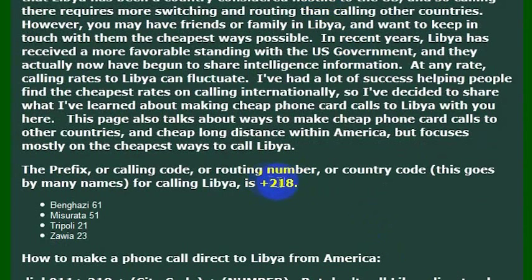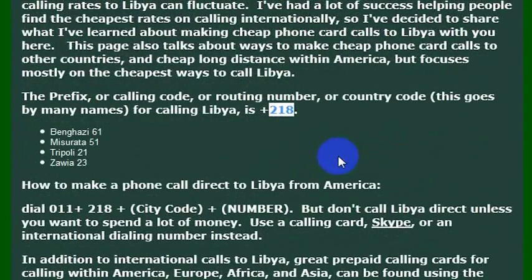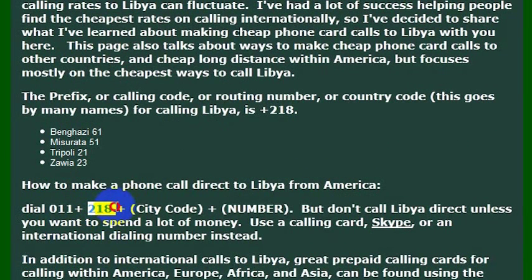In order to make the call, he needs to know that the country code is 218. That is the country code for Libya. So if you're dialing from the United States, you would dial 011, and then that gets you an international line from a phone that's enabled to make an international phone call. Then 218 is the country code for Libya.